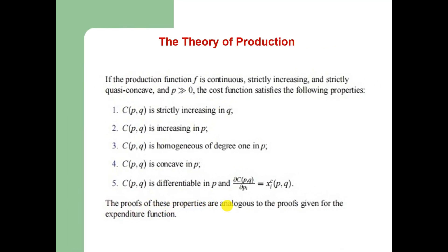If the production function is continuous, strictly increasing, and strictly quasi-concave, and the price vector is strictly positive, the cost function satisfies the following properties: it is strictly increasing in output; it is increasing in input prices; it is homogeneous of degree 1 in p; it is concave in p; it is differentiable in p; and the partial derivative of the cost function with respect to the price of input i is the conditional demand for input i as a function of input prices and output level. The proof of these properties is analogous to the proof given for the expenditure function in consumption theory.